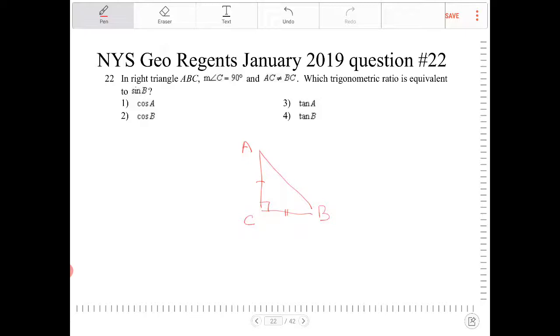Which trigonometric ratio is equivalent to sine B? So you have to understand what this question is really asking for is whether or not you understand the co-trig identity for sine and cosine. So as it turns out, sine of B will be equivalent to cosine of A.